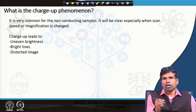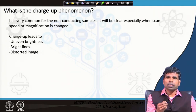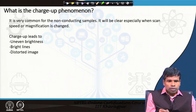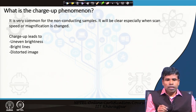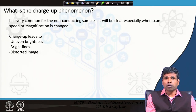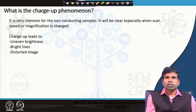When we go for a slower scan rate, our signal-to-noise ratio will be much improved and we will get a much higher secondary and backscattered electron yield, giving us the best resolution or highest signal. Similarly, when magnification is changed and the sample is non-conducting, you will see distortion in the image. This charging up leads to uneven brightness — you may see bright lines or a distorted image. These are the outcomes when the sample is not conducting and charge builds up at the surface.